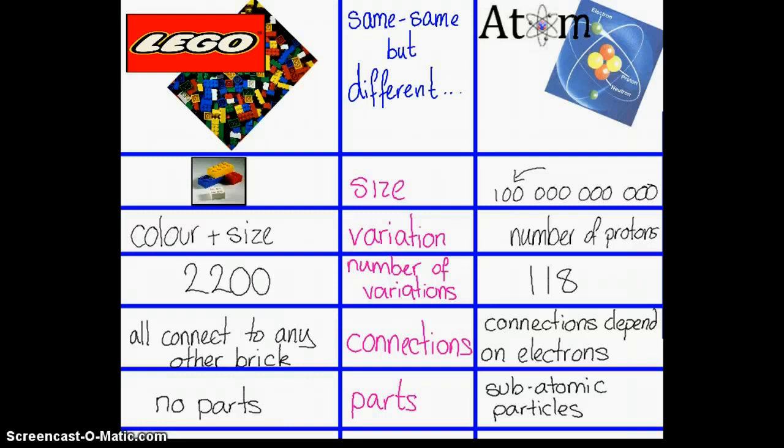All Lego blocks can connect to any other brick, but for atoms, only certain ones will join up with other ones, and that will depend on the electrons and how many there are in the outer shell. A Lego block cannot be broken into smaller parts. An atom can be broken into its subatomic particles, the electron, the proton, and the neutron.